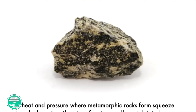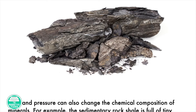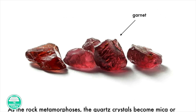The heat and pressure where metamorphic rocks form squeeze minerals closer together, transforming small crystals into larger crystals. Heat and pressure can also change the chemical composition of minerals. For example, the sedimentary rock shale is full of tiny quartz crystals. As the rock metamorphoses, the quartz crystals become mica or garnet.